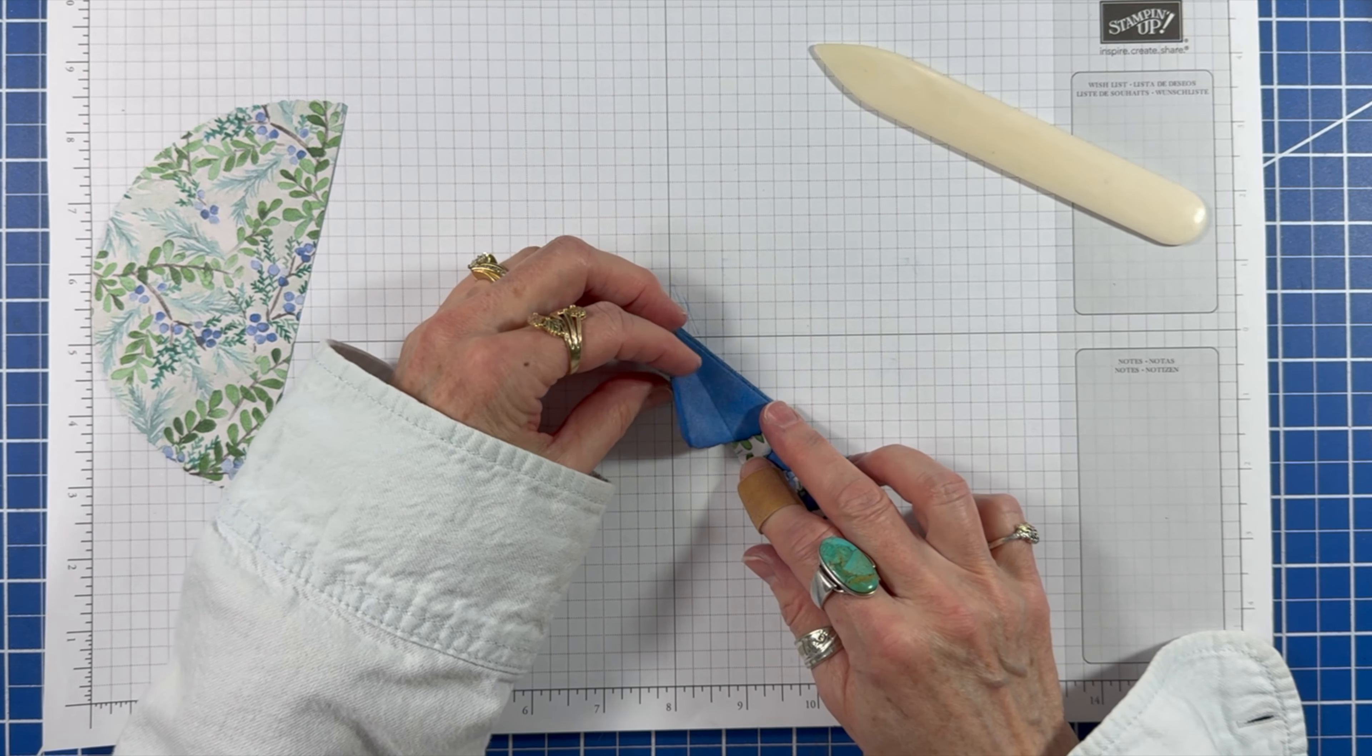I placed the tree with the sponged edges on the left side of the card. This little tree I made off camera with the 5th largest deckled circle die. The tree with the dimensionals was placed front and center.